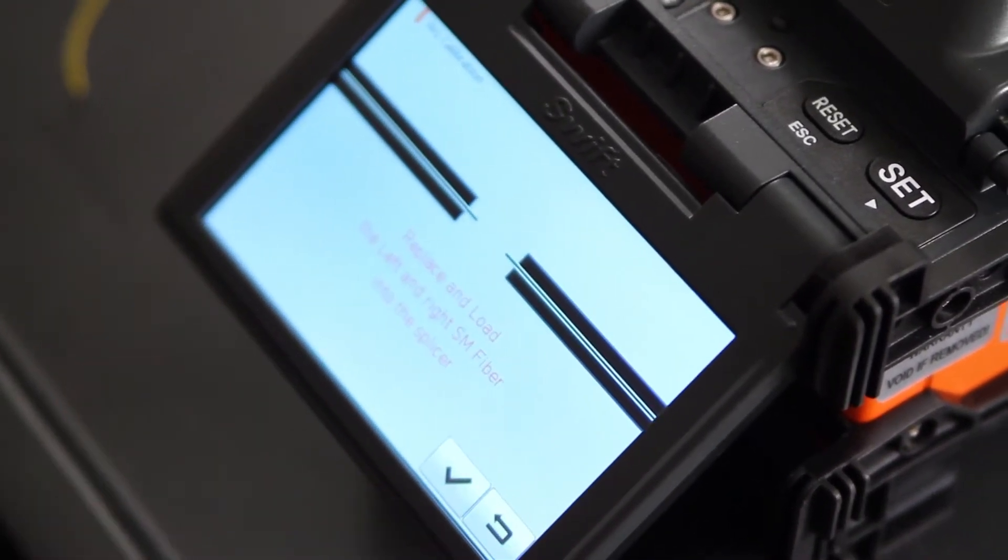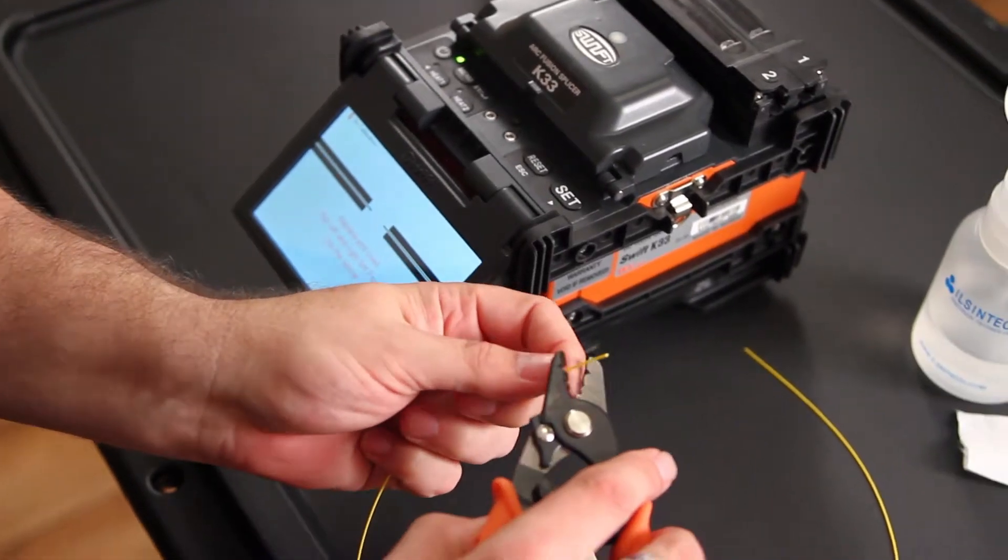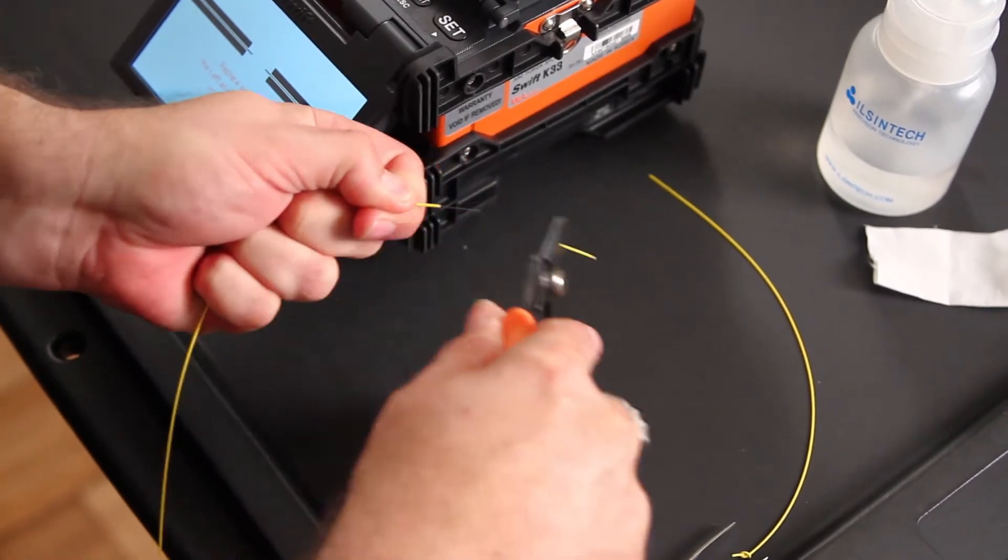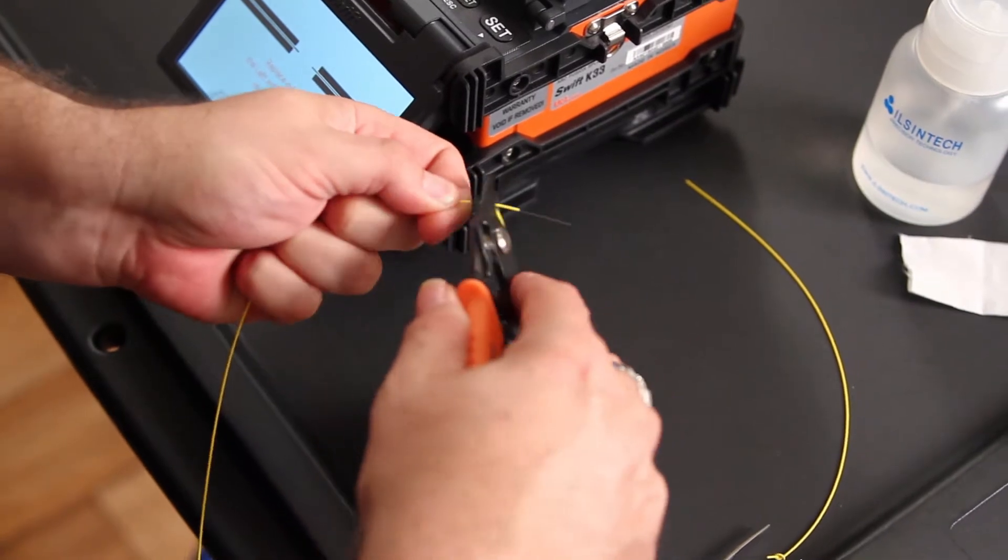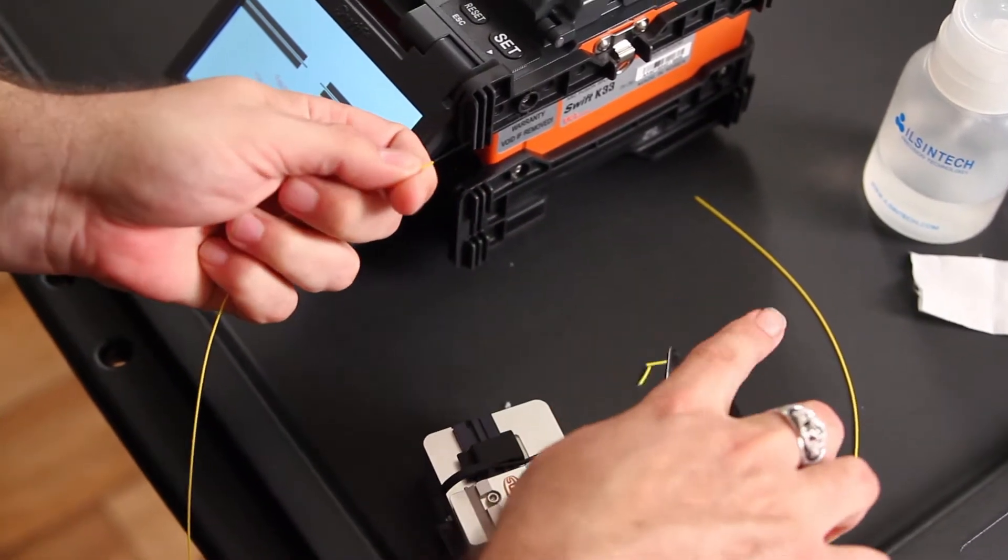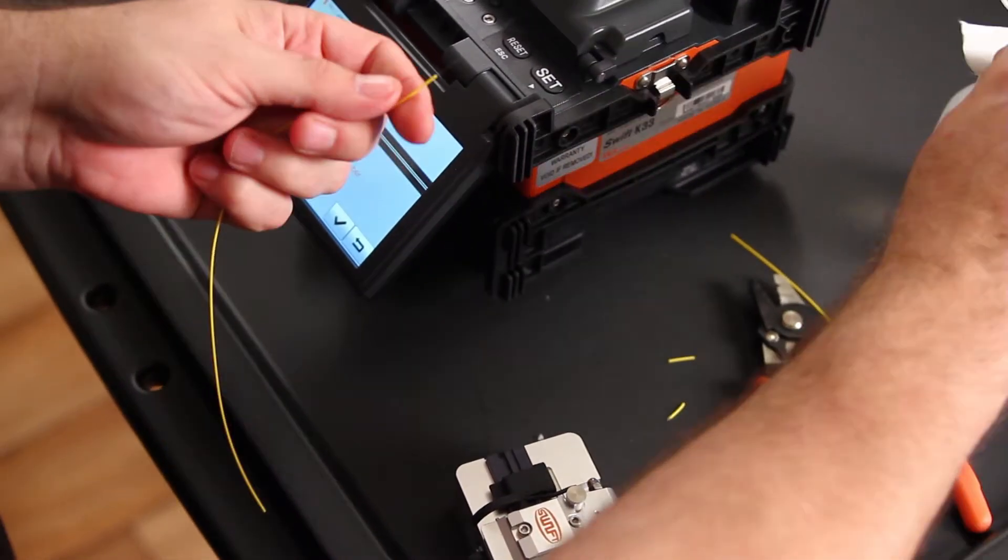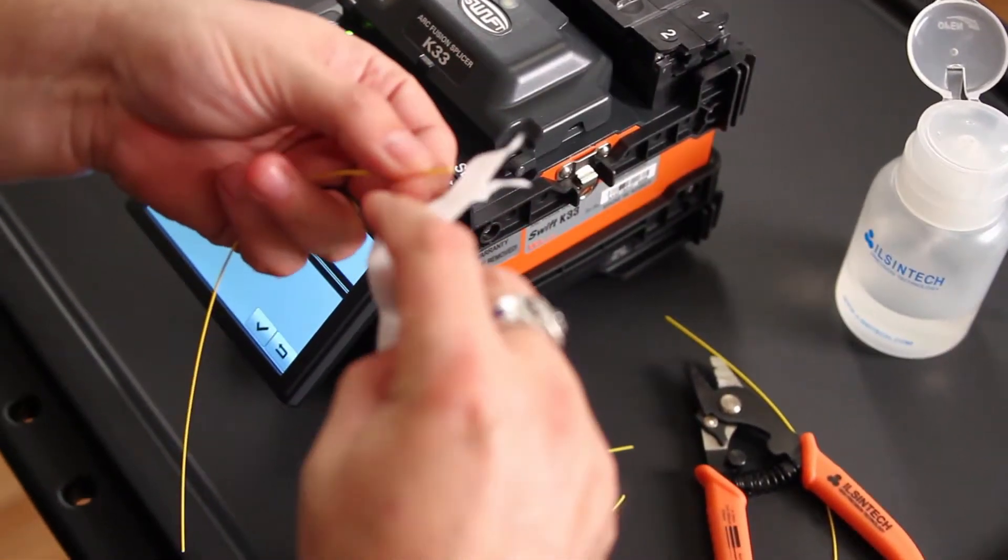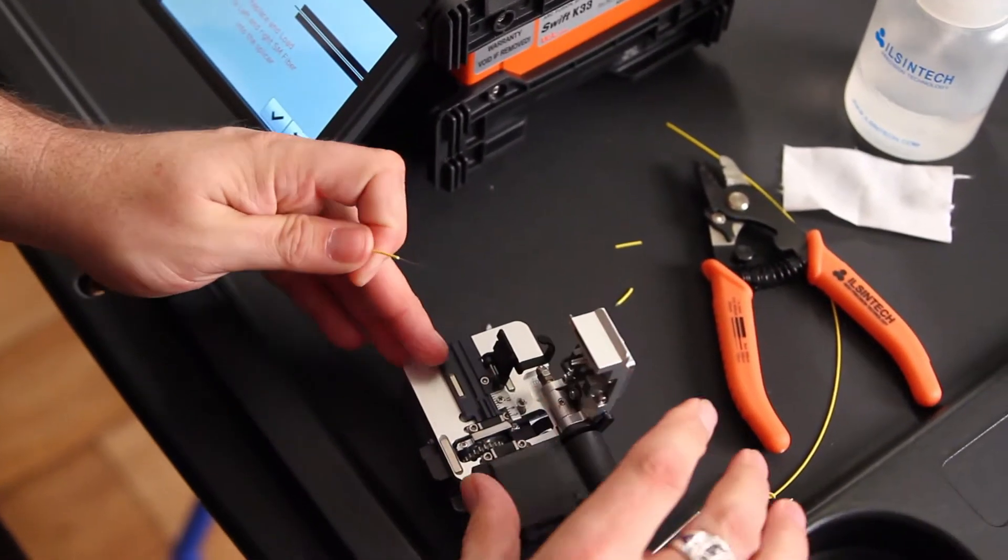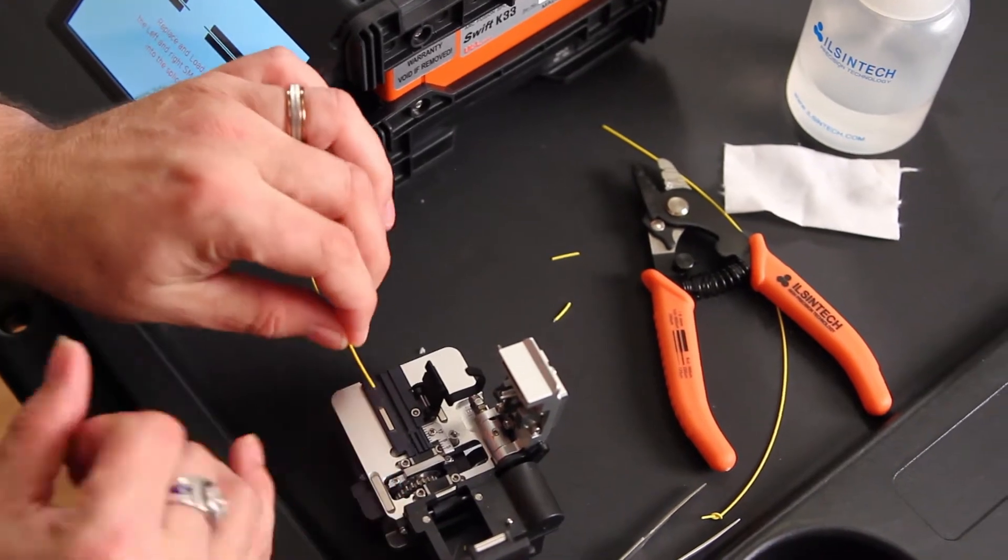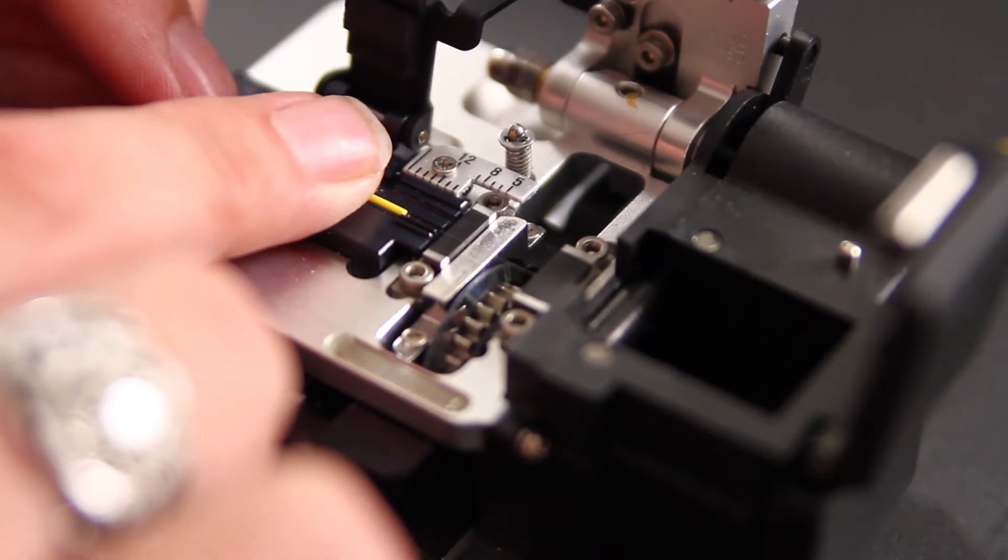and prepare and load your fiber. Clean and cleave. You want the end of your tight buffer to be at 13 millimeters on your scale.